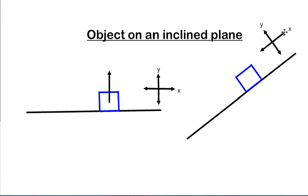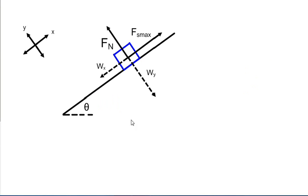But when we have an object on an incline, we see that the x and y plane is parallel and perpendicular to the incline. And when an object is on an incline, we see that there's a gravitational force acting downwards.